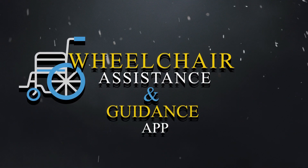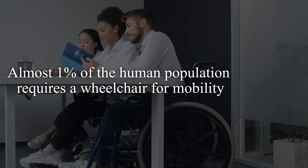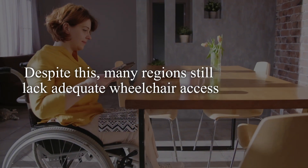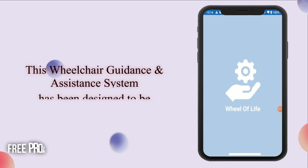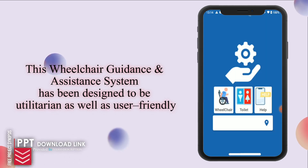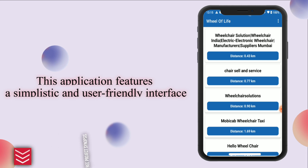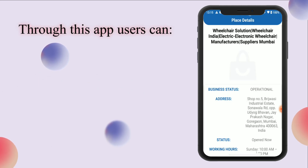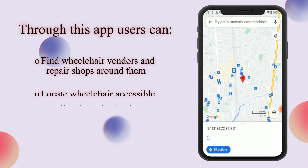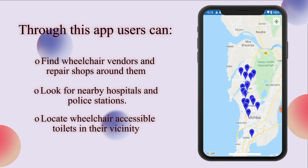Wheelchair Assistance and Guidance App. Almost 1% of the human population requires a wheelchair for mobility. Despite this, many regions still lack adequate wheelchair access. This wheelchair guidance and assistance system has been designed to be utilitarian as well as user-friendly, featuring a simplistic interface. Through this app, users can find wheelchair vendors and repair shops around them, locate wheelchair-accessible toilets in the vicinity, and look for nearby hospitals and police stations.